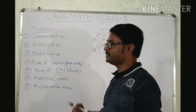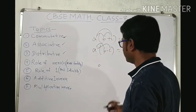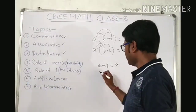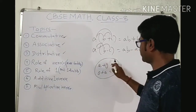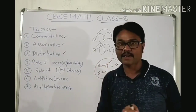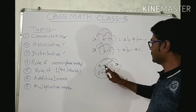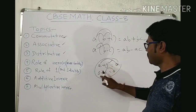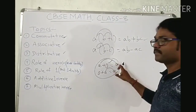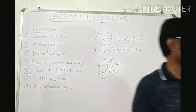Next is the role of 0 for rational numbers. Suppose A is a rational number. If you add 0 to it, then A plus 0 equals A, and 0 plus A also equals A. When we add 0 with a rational number, its value does not change — it retains its identity. Therefore, 0 is the additive identity of rational numbers.